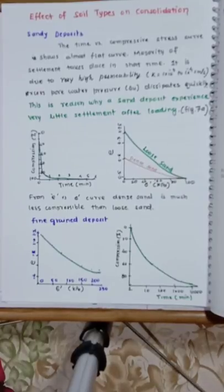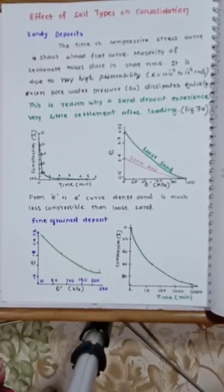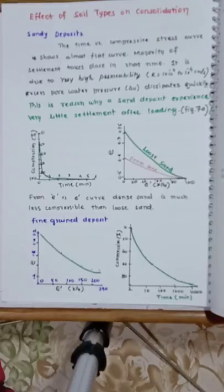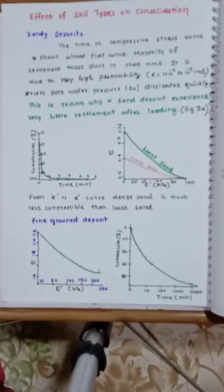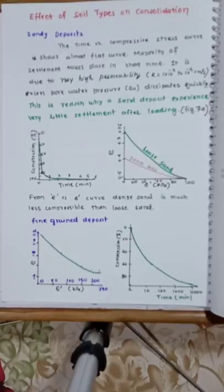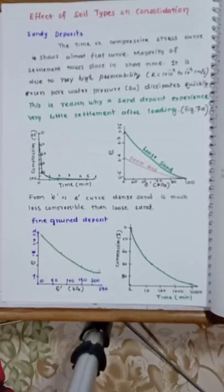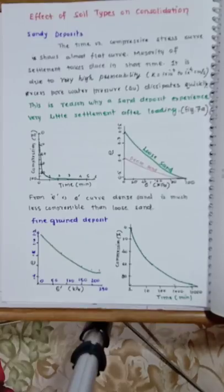Today we discussed the basics of consolidation: excess pore pressure, definition of consolidation, Taylor's spring analogy model and its correlation with actual soil strata, and types of clay deposits (NC, OC, UC). Next, we will study how the consolidation test is conducted and how the results are analyzed — that is the major part of the entire chapter. Good day; we will come back in the next lecture.